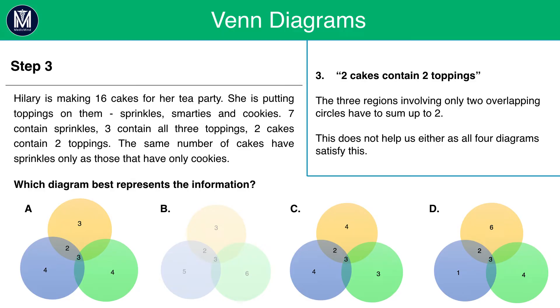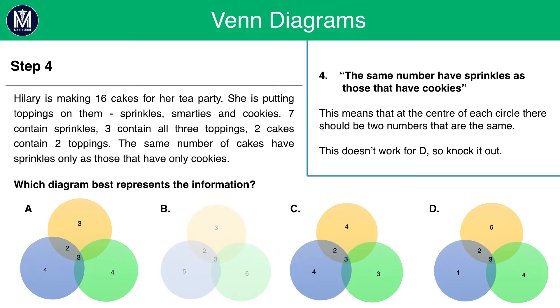We can also look at another piece of information that tells us about 2 categories. We are told the same number that have sprinkles as those that have cookies. That means at the centre of each circle, there should be 2 numbers that are the same. For A, we see that there are 2 4s. For C, we see that there are 2 4s. But for D, we do not see that. Therefore, we knock it out.